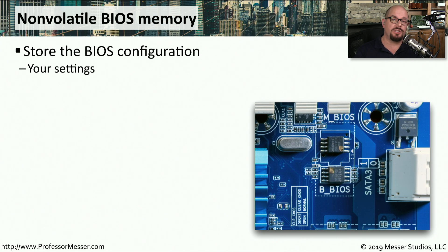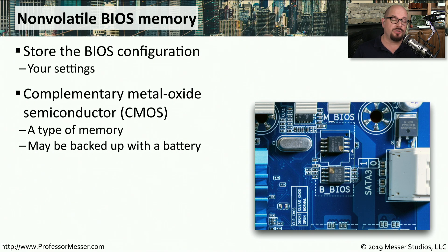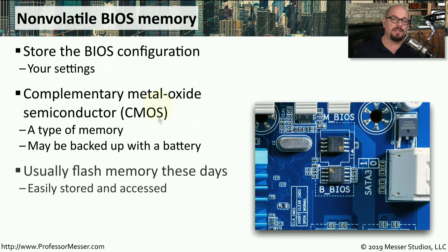When you make changes to the BIOS configuration, you need somewhere on your system to store those changes. Those changes are stored in non-volatile BIOS memory, usually flash memory on the motherboard that stores all of our BIOS configuration settings. Before we had flash memory, we stored everything on complementary metal oxide semiconductors, or CMOS. The CMOS allowed us to write and change information, and a battery on the motherboard kept that information constantly refreshed so we didn't lose our configurations. These days, BIOS configurations are stored on flash, which means we don't need a battery to maintain those configurations. Even so, you'll still hear people refer to that configuration area as the CMOS or CMOS settings — when we refer to CMOS today, we're really referring to the data stored in flash memory that contains the BIOS configuration settings.